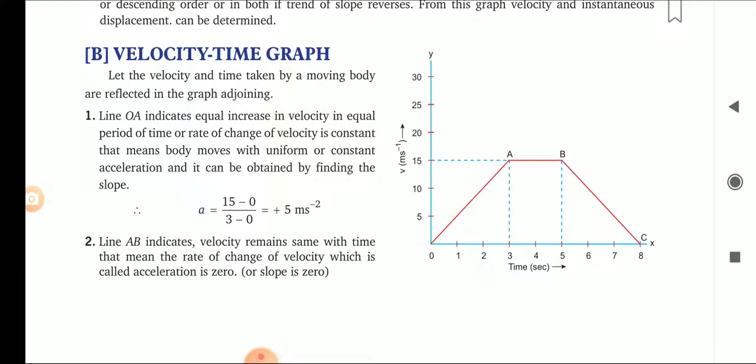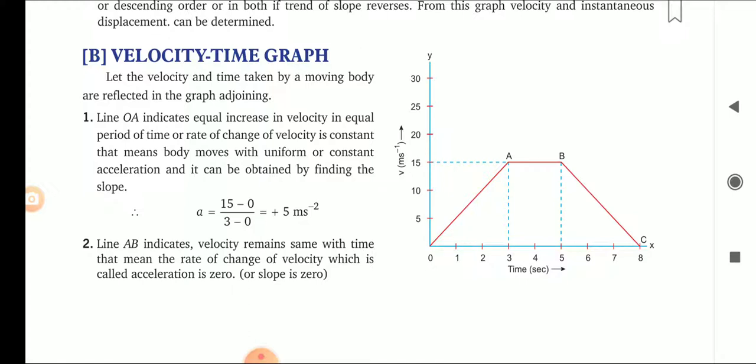Hello children. Now it is our turn to discuss the VT graph. In the last lecture we discussed the DT graph, so we will proceed in the same way. Slope is the perpendicular component upon the base component, that is vertical upon horizontal, or tan theta, or change in y component upon change in x component. The slope of the velocity-time graph gives us acceleration, because on the y-axis we take velocity and on the x-axis we take time, so change in velocity upon change in time gives the slope, and that slope gives the acceleration.